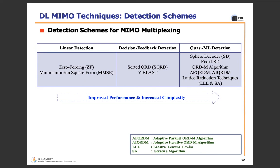For detection, there are several types: linear detection, decision feedback detection, and quasi-ML / Maximum Likelihood detection. The simplest detections are on the left — starting from Zero Forcing (ZF) and MMSE, then more complex algorithms like sorted QRD V-BLAST, and even more sophisticated algorithms with improved performance at increased complexity cost — including the sphere decoder and the fixed SD QRD-M algorithm.